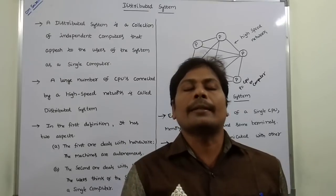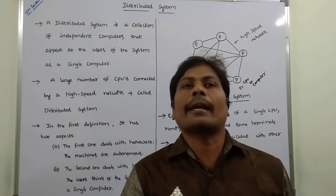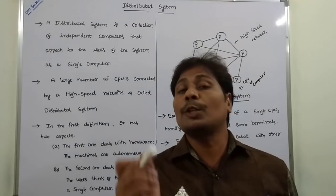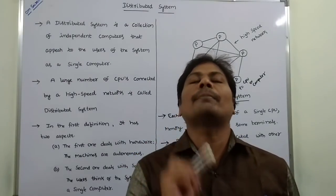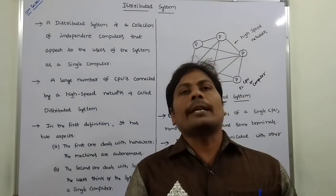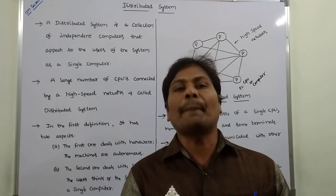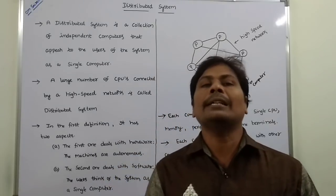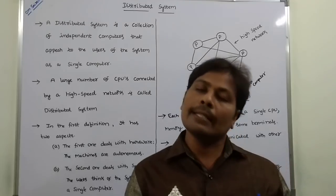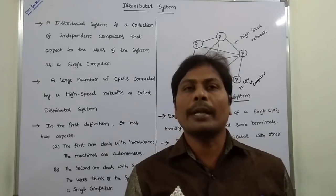First of all, what is a Distributed System? A Distributed System is a collection of autonomous computers that appear to the users of the system as a single computer. Another definition is: a Distributed System is a collection of independent computers that are connected by using a high-speed network, such as LAN.